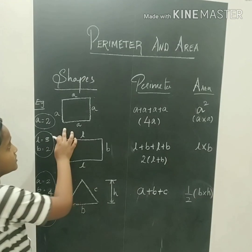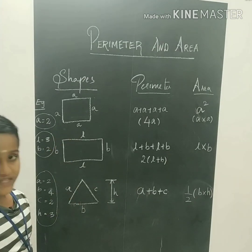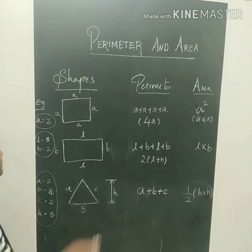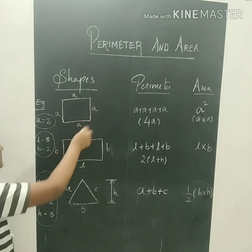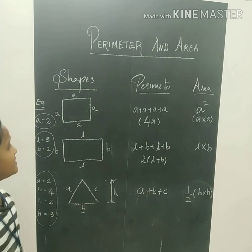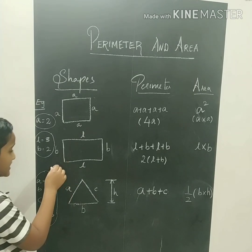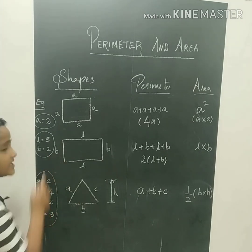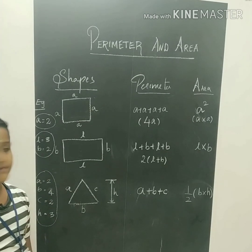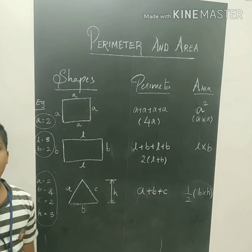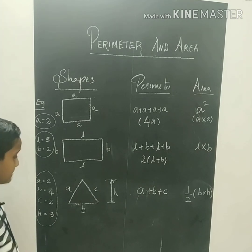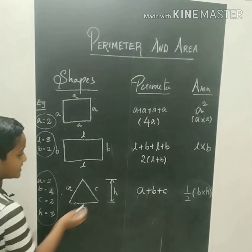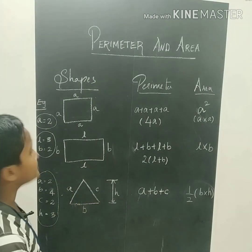Now, for shapes, this is the perimeter of each side. For a square: A plus A plus A plus A, which is 4A. For a rectangle: L plus B plus L plus B, which is 2L plus 2B. For a triangle: A plus B plus C. This is the perimeter.